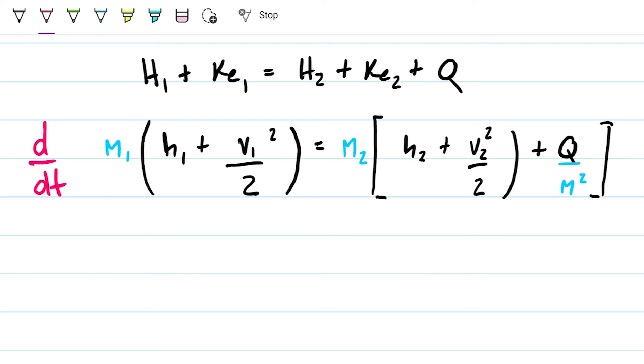Enthalpy at state one is not going to be changing over time. The velocity one is not going to be changing over time, it's always going to be 10 meters per second. Over here, same thing. It's not going to change. The rate of heat is not going to change. It's actually the mass, because we don't have a constant mass, we have a mass flow rate.